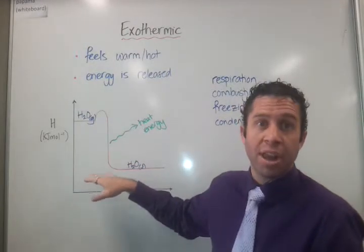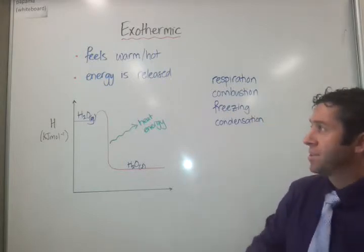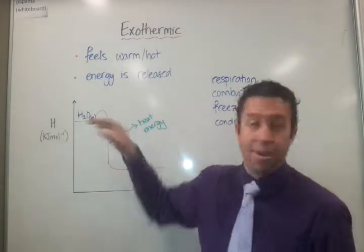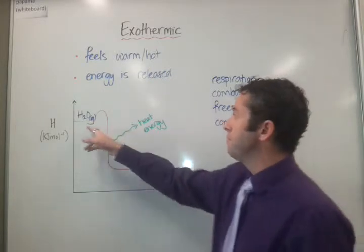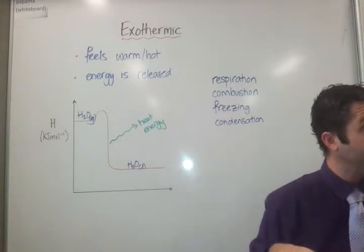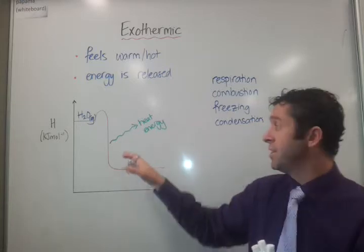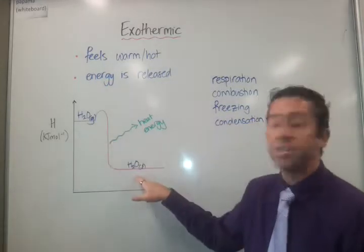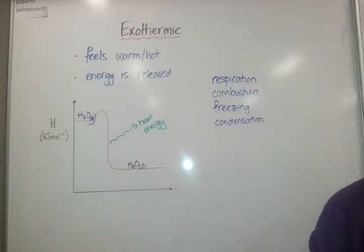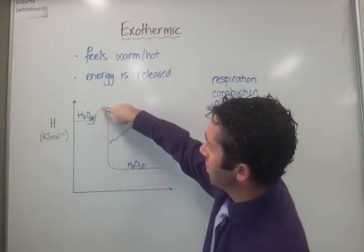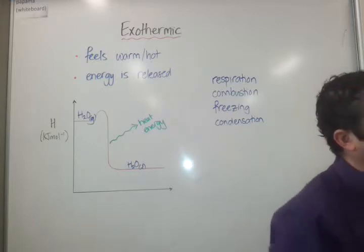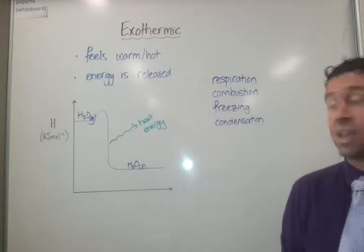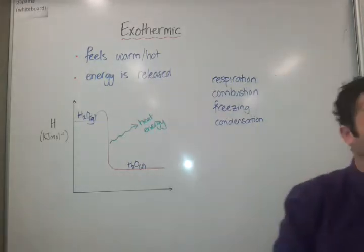In an exothermic reaction, the enthalpy drops. Now energy cannot be created or destroyed, so it has to go somewhere. An example is steam being condensed into liquid water — the steam particles are moving really fast and have a high enthalpy. If we remove heat energy by making the steam hit a cold surface, it transfers its heat energy to that cold surface, making it feel warm, and turns the steam into liquid. But for this reaction to occur, we need to activate it — that's what this little hump is on the graph. We see enthalpy goes up before it drops down. The particles need to collide with enough energy and the right orientation for a reaction to occur, as in combustion or respiration.